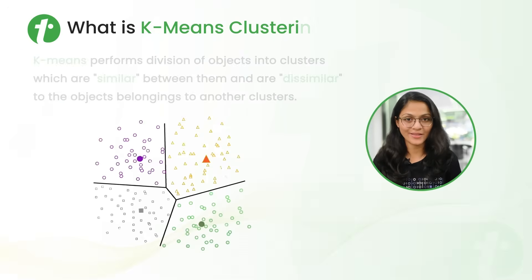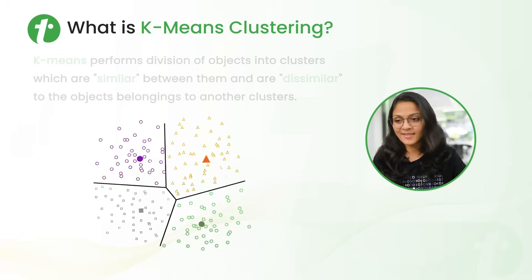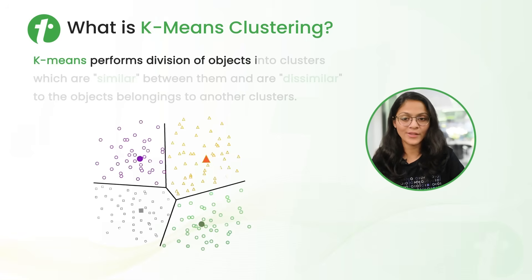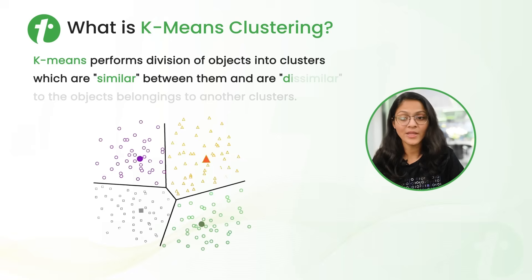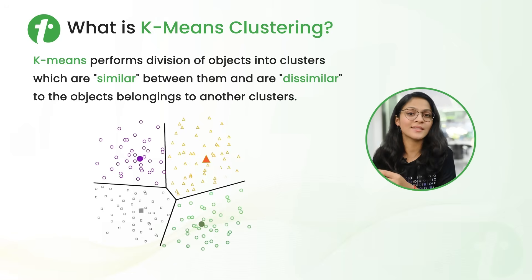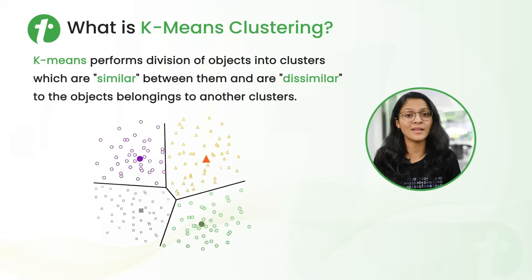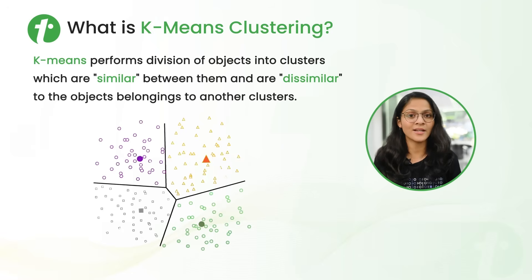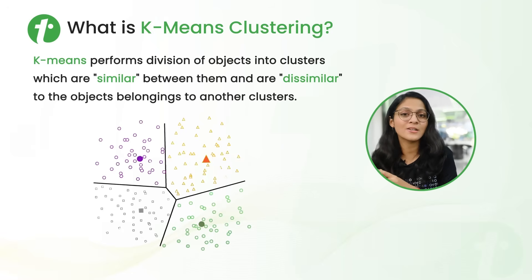Now let's talk about K-means clustering. The definition says: K-means clustering performs division of objects into clusters which are similar within themselves and dissimilar to objects belonging to another cluster. That means two data points that are similar lie in the same group, and two data points that are dissimilar lie in different groups.